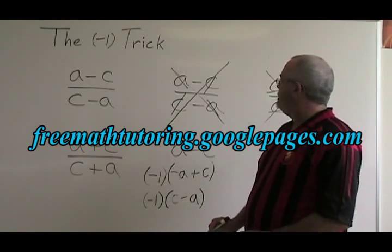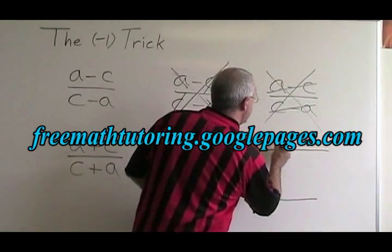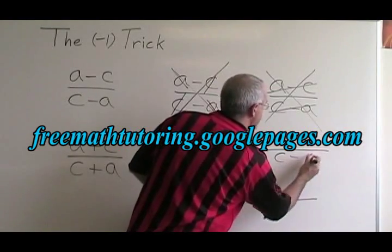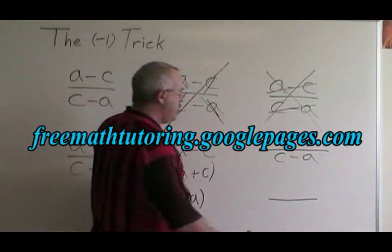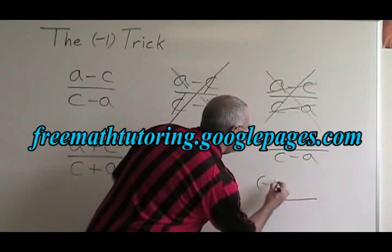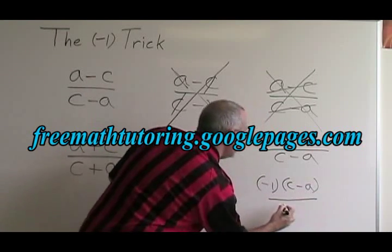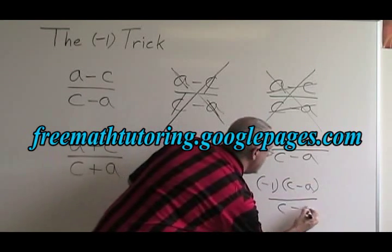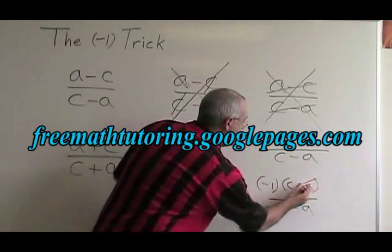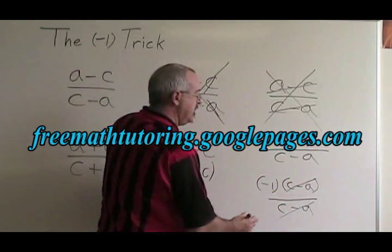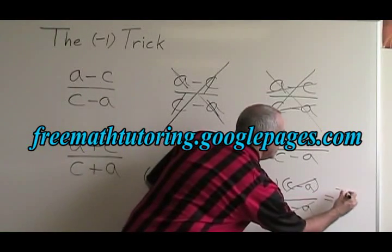If we have a minus c over c minus a and we apply the negative one trick, we end up with negative one times c minus a, over c minus a. Now the binomials are the same and we can cancel them. Our answer to this question is negative one.